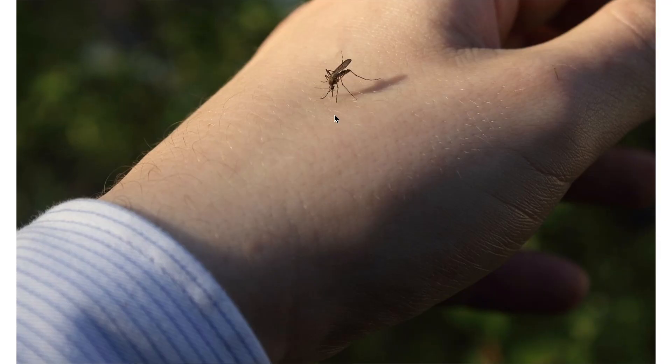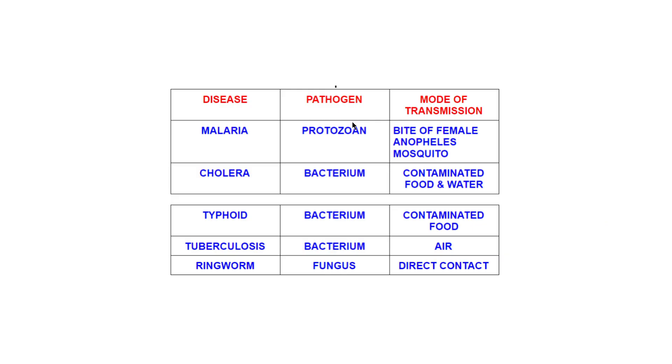When a female Anopheles mosquito bites a person suffering from malaria, it sucks in the pathogens — the protozoans present there. The name of that protozoan is Plasmodium. When the same mosquito bites a healthy person, the Plasmodium may enter the healthy person's body and that person also gets infected with malaria. So in malaria, the carrier is the mosquito, and it is transmitted through the bite of the female Anopheles mosquito.